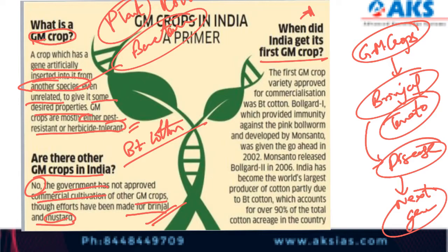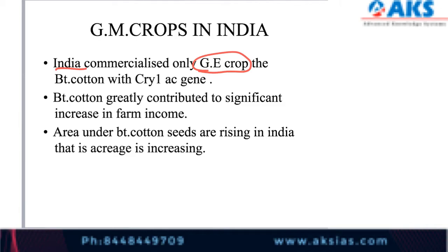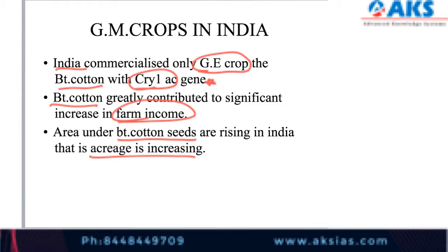The first GM crop approved for commercialization in India was Bt cotton — Bollgard 1, which provided immunity against the bollworm, developed by Monsanto. Bollgard 2 was released in 2006. India has become the world's largest producer of cotton, partly due to Bt cotton, which accounts for 90% of total cotton acreage in the country. India commercialized only this genetically engineered crop with the cry1Ac gene.